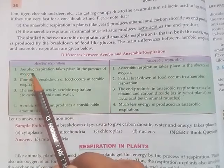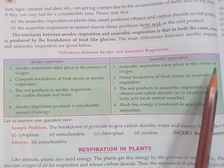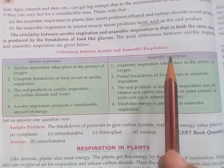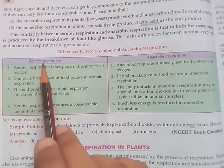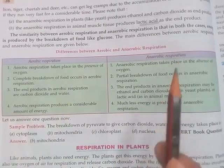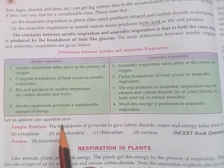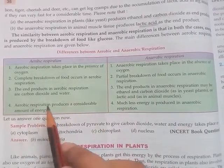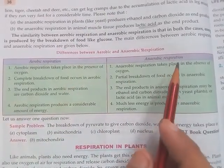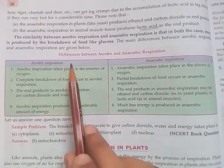Let's look at the differences between aerobic and anaerobic respiration. Aerobic respiration occurs in the presence of oxygen, involves complete breakdown of food, and its end products are carbon dioxide and water. Anaerobic respiration occurs in the absence of oxygen and involves only partial breakdown. Its end products are ethanol, carbon dioxide, or lactic acid. Aerobic respiration produces a huge amount of energy — 38 ATP molecules — while anaerobic respiration produces very little energy.